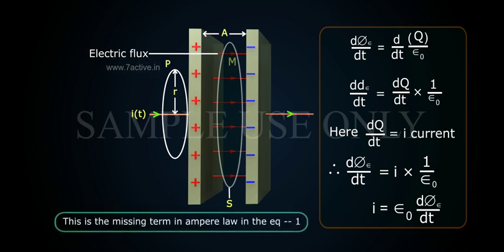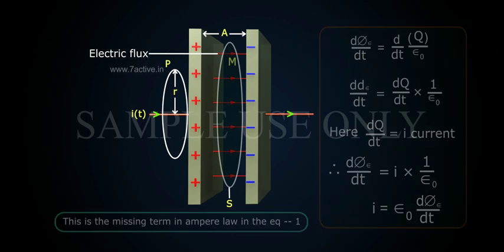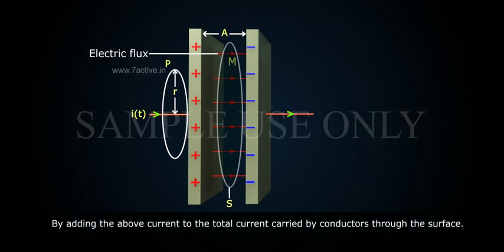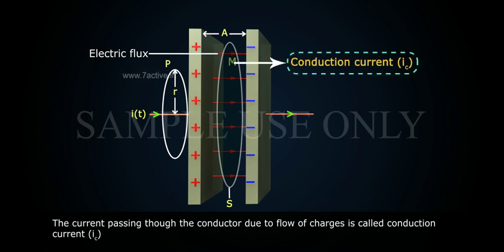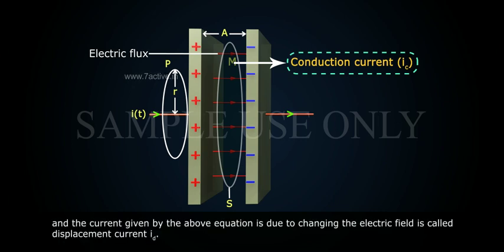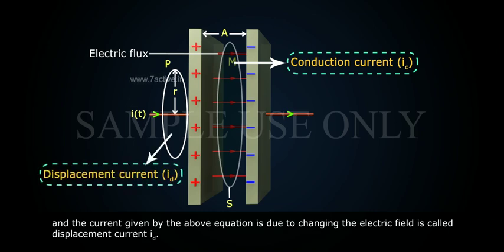This is the missing term in Ampere's law. By adding the above current to the total current carried by conductors through the surface, the current passing through the conductor due to flow of charges is called conduction current Iₒ, and the current given by the above equation due to changing electric field is called displacement current Iₐ.